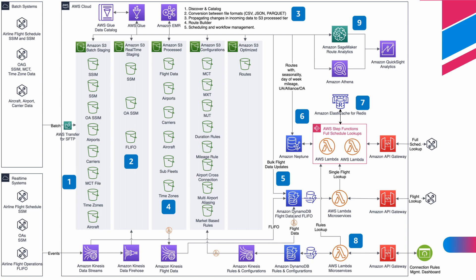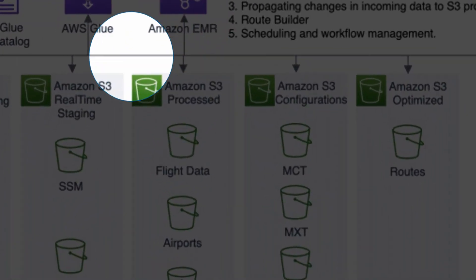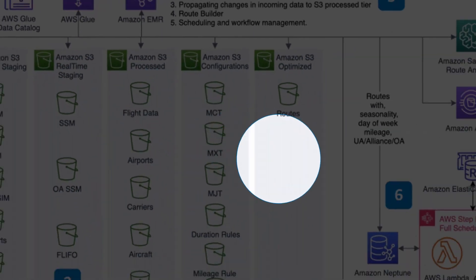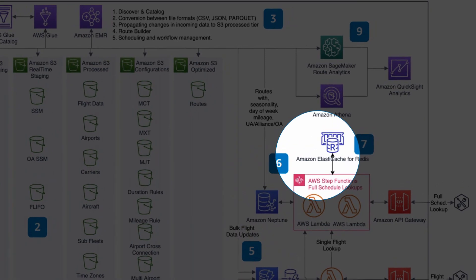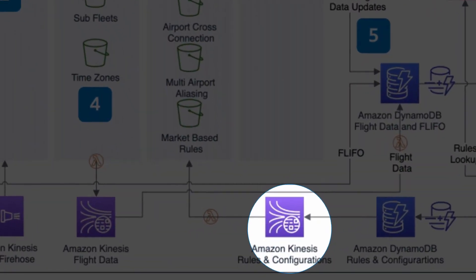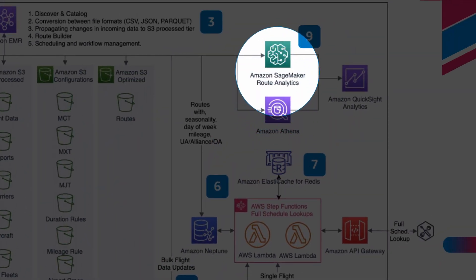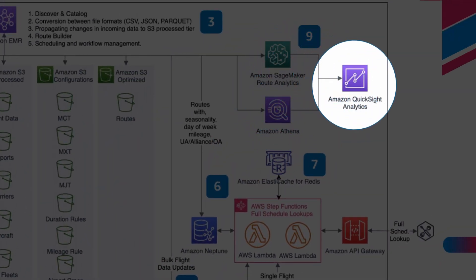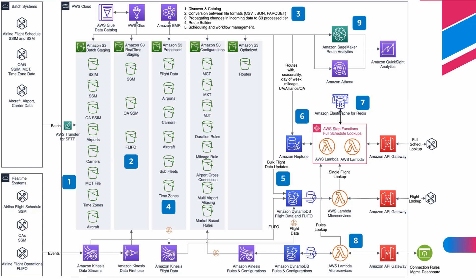As we can see, this design is using various AWS services like AWS Glue, EMR, S3, Lambda, Neptune, ElastiCache, DynamoDB, Kinesis, Amazon Athena, SageMaker, and QuickSight. We will try to understand what these services do and, in this scenario, how they can help us build a scalable and fault-tolerant application structure.